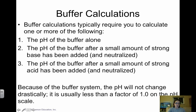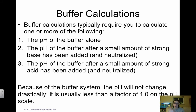Buffer calculations typically require us to find a few different things. We might be asked to find just the pH of the buffer given concentrations of the weak acid and salt, or to find the pH of a buffer after adding a strong acid or strong base. Because it's a buffer system, the pH will not change drastically — we assume we're under the buffer capacity, so it should change less than one unit on the pH scale.